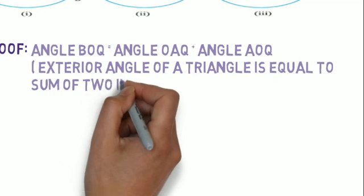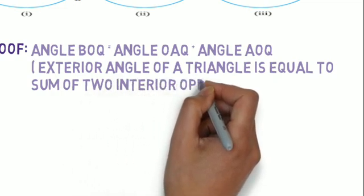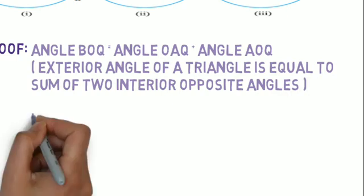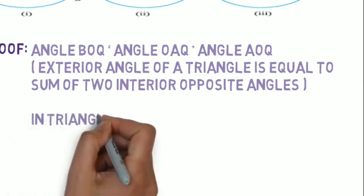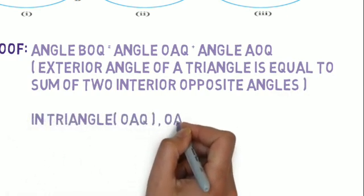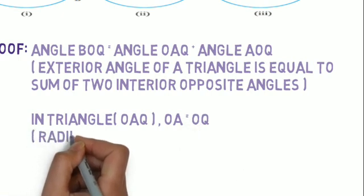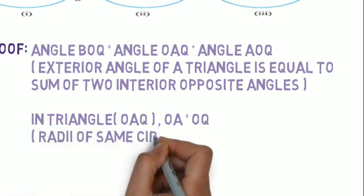Don't worry, I will explain using the figure also. First, I'm only writing here: In triangle AOQ (or you can write OAQ), OA is equal to OQ.